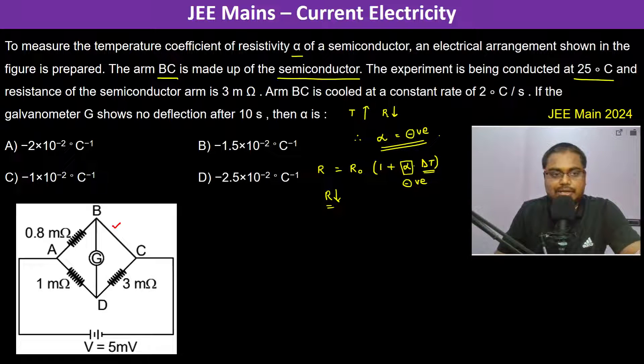The resistance of the semiconductor arm is 3 million ohms initially at 25 degree centigrade. Arm BC is cooled at a constant rate of 2 degree centigrade per second. If the galvanometer shows no deflection after 10 seconds, then alpha is?